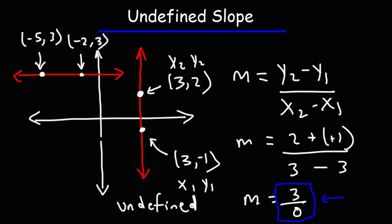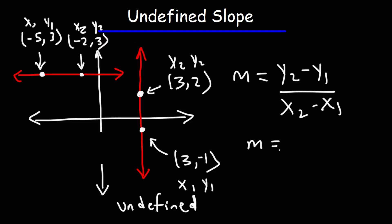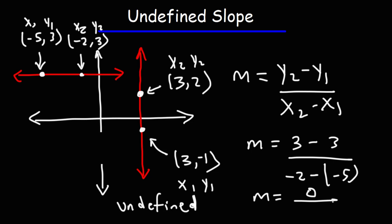Let's calculate the slope of that line to see why it's going to be zero. This is x1, y1 and this is x2, y2. Using the same formula: y2 is 3, y1 is 3, x2 is negative two, x1 is negative five. Three minus three is zero.